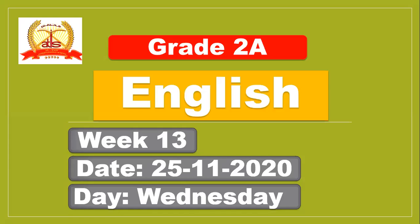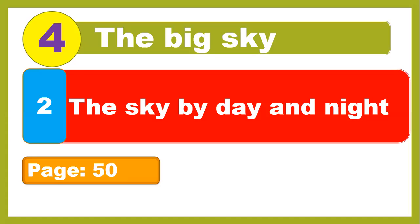Hi everyone, it's Bilal Ahmed. I hope you are doing well. This is today's summary of the English lesson. Today was 25 November 2020, Wednesday. As you know, we are in Unit 4, 'The Big Sky,' and today we started the new lesson — Lesson 2: 'The Sky by Day and Night,' page 50.